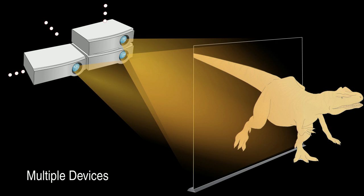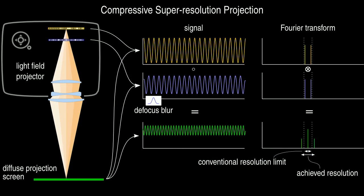We also describe extensions to the proposed system, such as arranging multiple projectors vertically to achieve higher-ranked light field decompositions, or horizontally to increase field of view. In addition to glasses-free 3D display, we show that our light field projector can achieve super-resolution and high-dynamic range display of 2D images when used with a conventional diffuse screen.